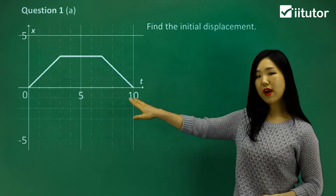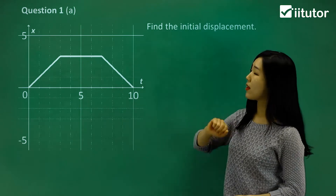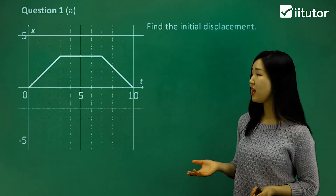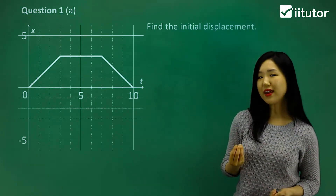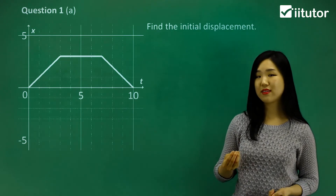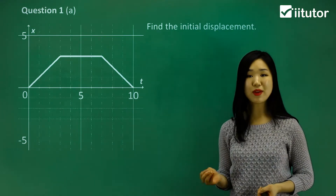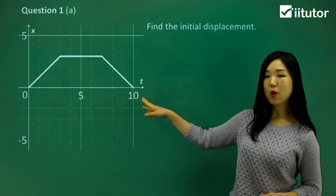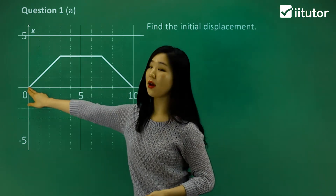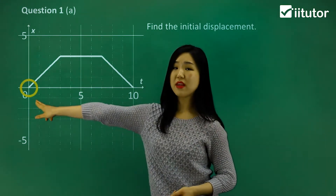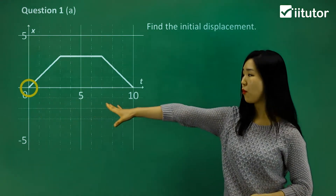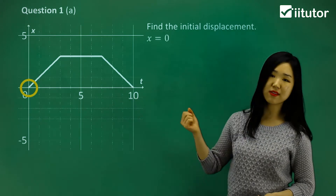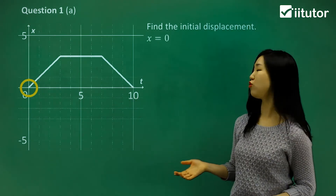If you have a look at this one, we can see that firstly it's asking us the initial displacement. The word 'initial' is when time is 0, when t is 0. So you know that this axis is the time. When t is 0, when time is 0, it's here. So displacement is simply that point there where it starts — when x is 0 as well. So x is 0. That's the initial displacement.